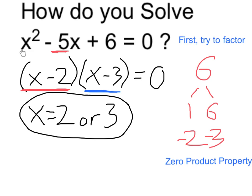For example, 2 squared is 4, minus 5 times 2 would be 10. 4 minus 10 is negative 6, plus 6 is 0.